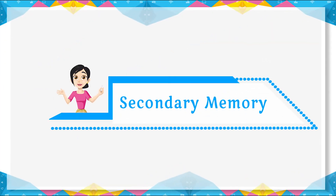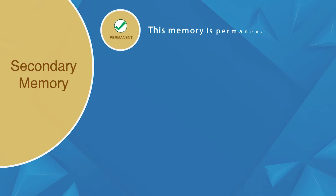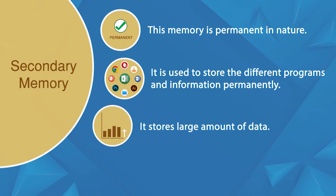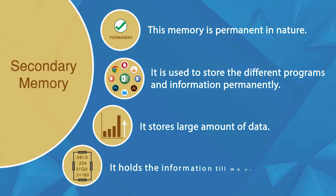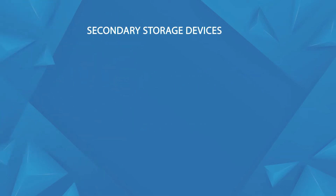Secondary memory is a permanent memory which is used to store different programs and information permanently. It can store large amounts of data. There are different types of secondary storage devices.